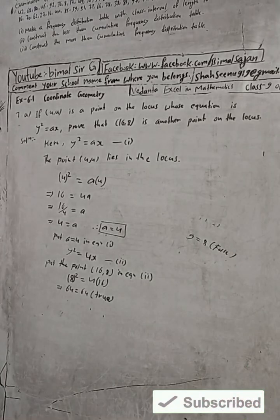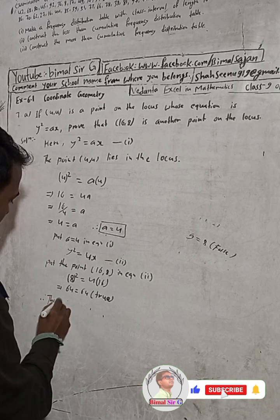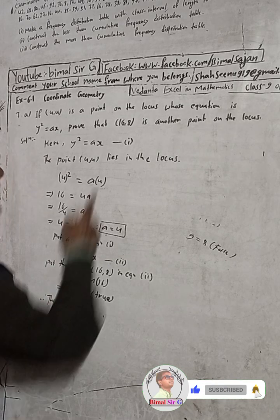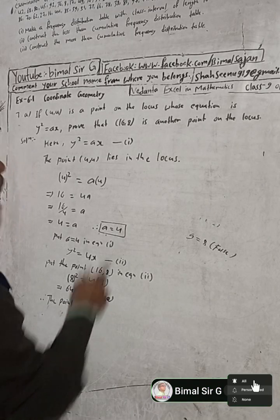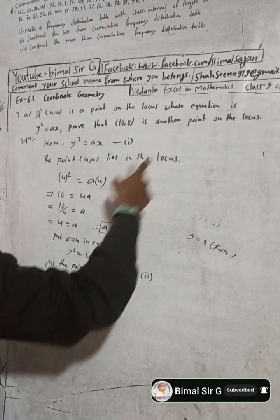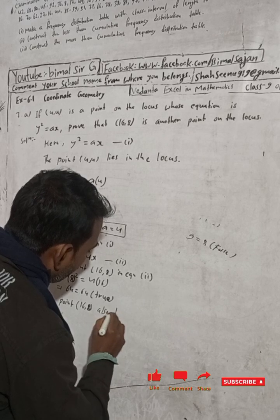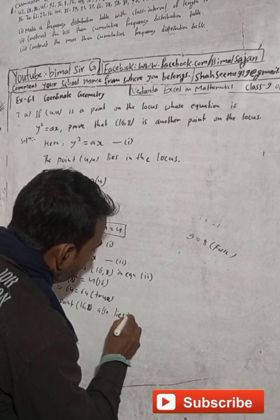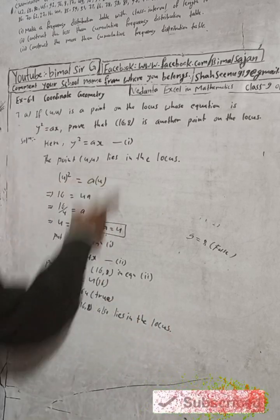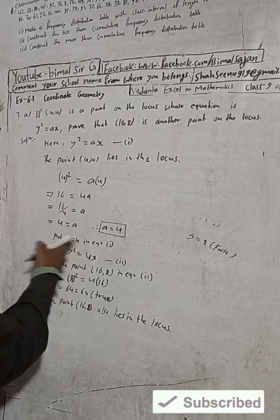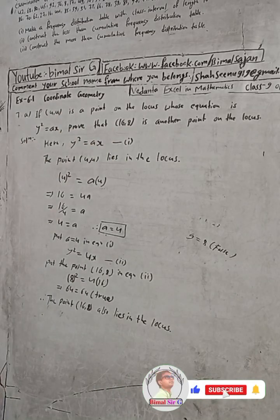It is proved. Therefore, the point (16, 8) also lies on the locus. If (4, 4) lies on the locus, then (16, 8) also lies on the locus. It is proved.